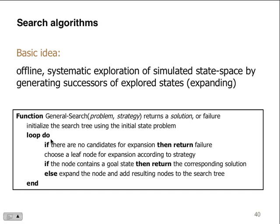Loop do — what does that mean? If there are no candidates for expansion, then return failure. Otherwise, choose a leaf node for expansion according to the strategy. If the node contains a goal state, then return the corresponding solution; else expand the node, adding results to the nodes. This is what I'm calling pseudocode — it's not programming, it's not an algorithm, it's a solution.